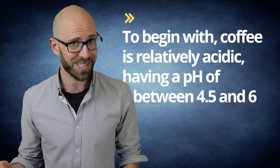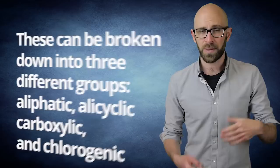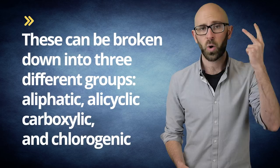To begin with, coffee is relatively acidic, having a pH of between 4.5 and 6, and for reference, in case you've forgotten your high school chemistry, 7 is neutral. In fact, there have been over 40 types of acid found in roasted coffee. These can be broken down into three different groups: aliphatic, allacyclic carboxylic, and chlorogenic.